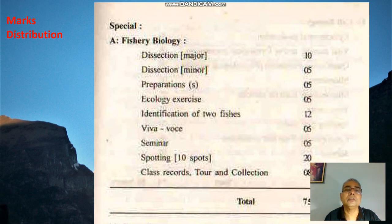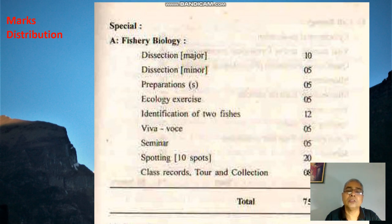10 marks has been allotted; for minor dissection 5 marks; for preparation, that is making a permanent slide, 5 marks; ecological exercises 5 marks; you have to identify two fishes whichever are given to you — 12 marks total, meaning 6 marks for each fish identification.